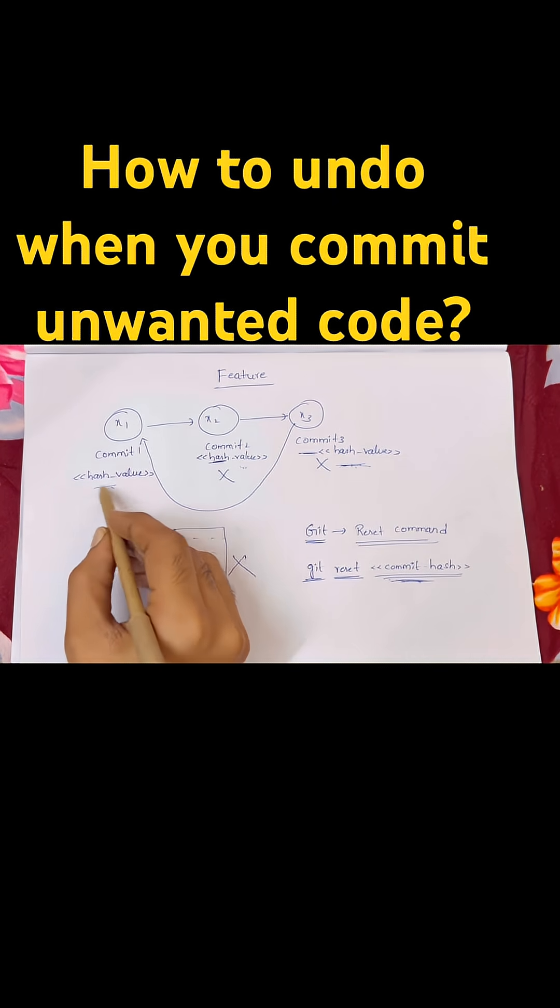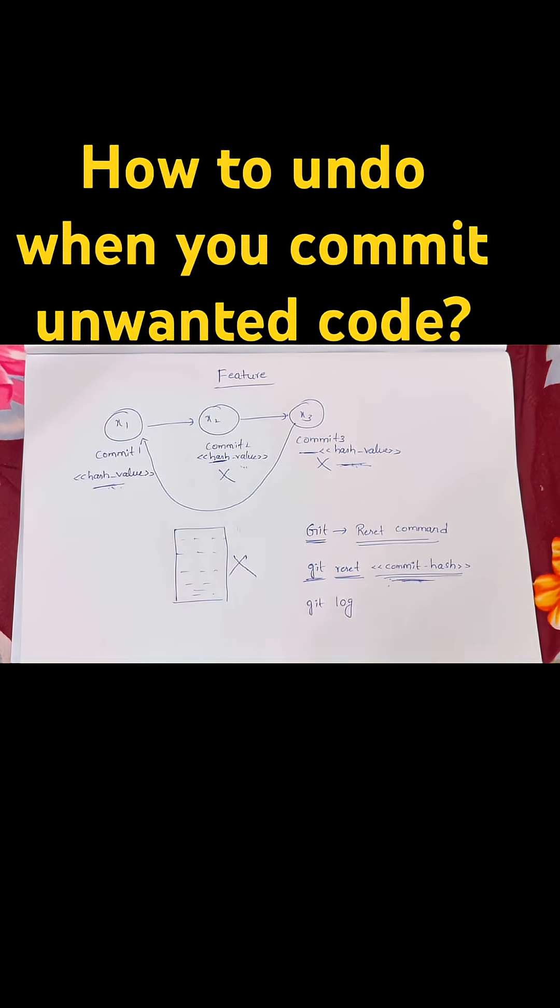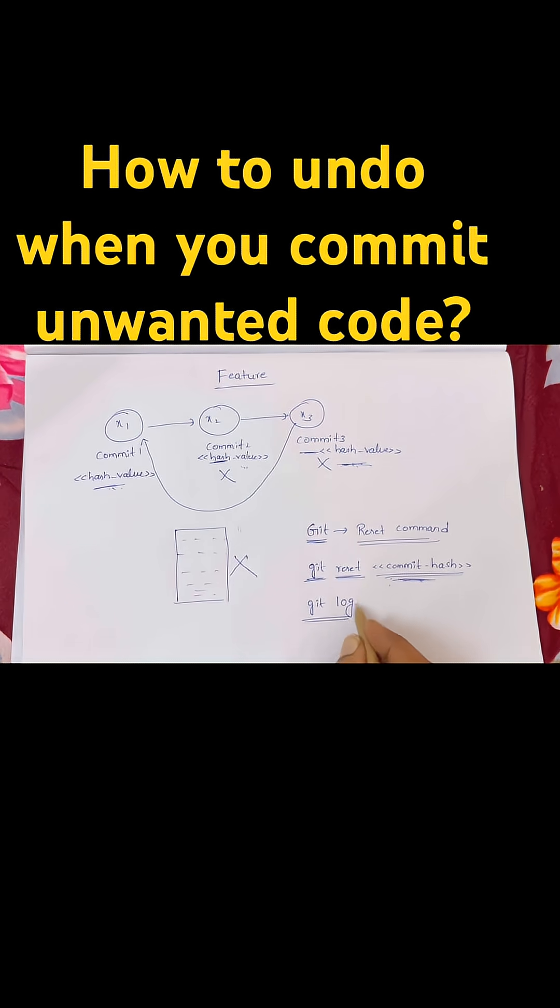The hash values and your commit history can be found using git log command.